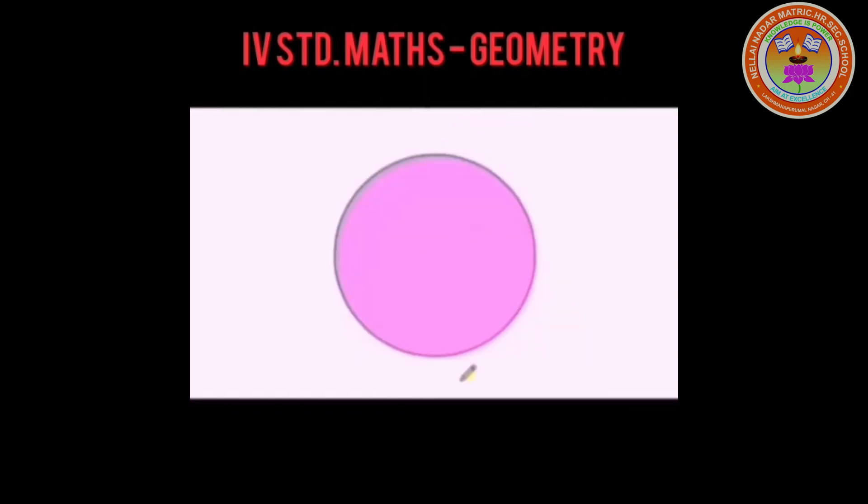What about the circle? Does it have a side or a corner? No, a circle does not have any corner or any side.